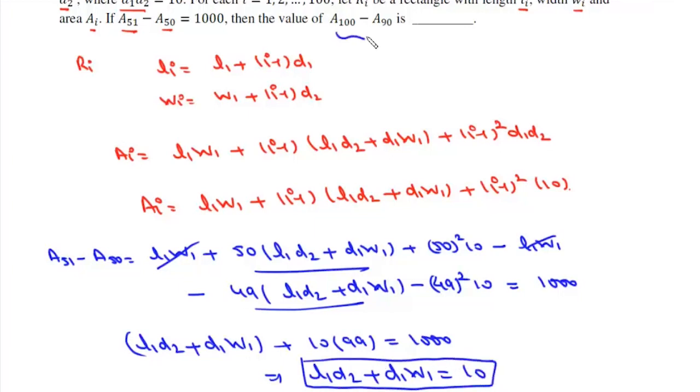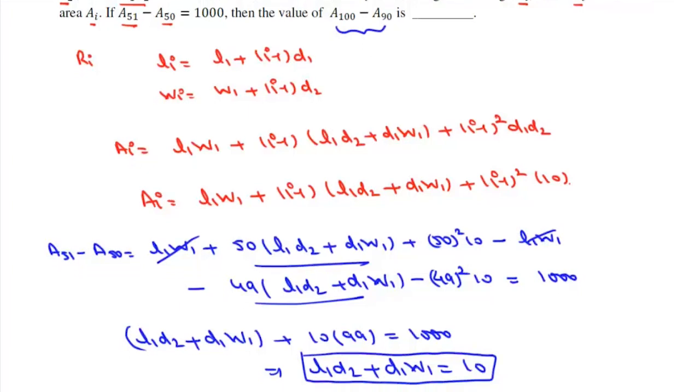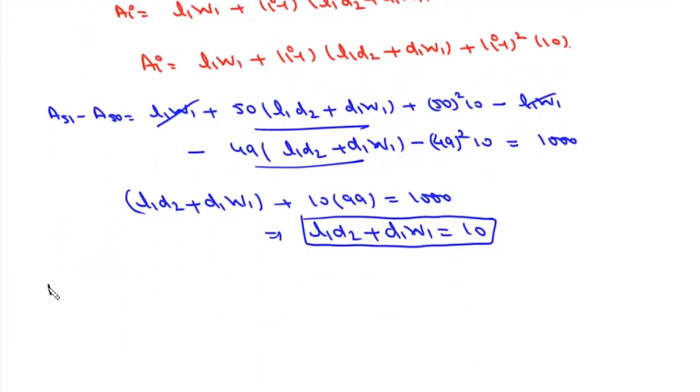So from here we will get L1D2 plus D1W1 will be equal to 10.